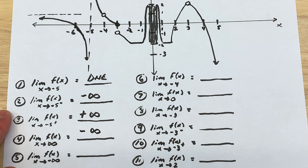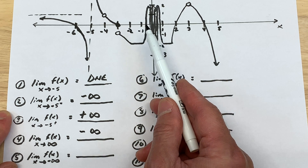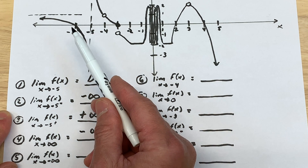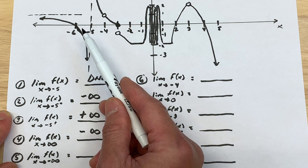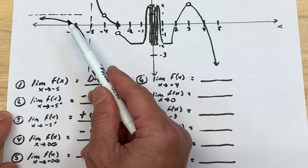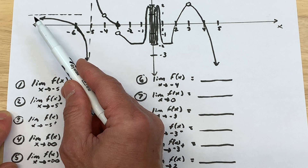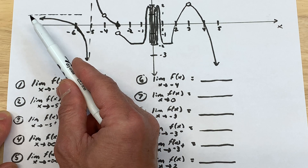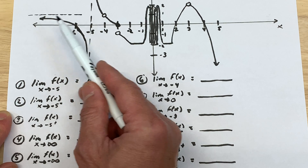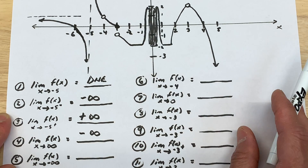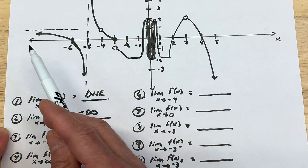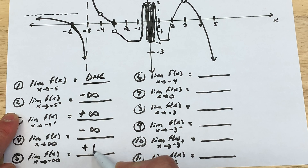For number five: the limit as x approaches negative infinity. As x is getting smaller and smaller, approaching negative infinity, the y values go up and then start to level off, almost like a horizontal line. The graph is approaching a dashed line, and it looks like that y value is at positive 1. So the limit here is positive 1.